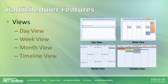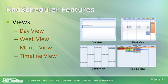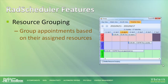RAD Scheduler supports several views: the day view showing a single day over a 24-hour period; the week view showing all days of the week with 24-hour periods; the month view showing all 31 days; and the newest addition, the timeline view, where you can see appointments over a period of days in a horizontal bar format. There's also resource grouping, which lets you group appointments by resource type — for example, grouping by rooms in a timeline view.